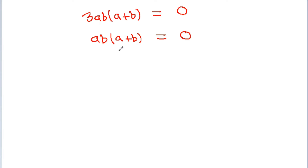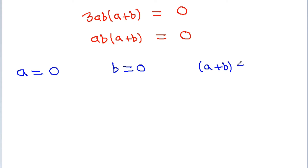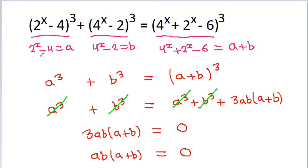From here we can get three equations: either a is equal to 0, or b is equal to 0, or a plus b is equal to 0. We have a is equal to 2 to the power x minus 4, and b is equal to 4 to the power x minus 2 to the power x minus 6.